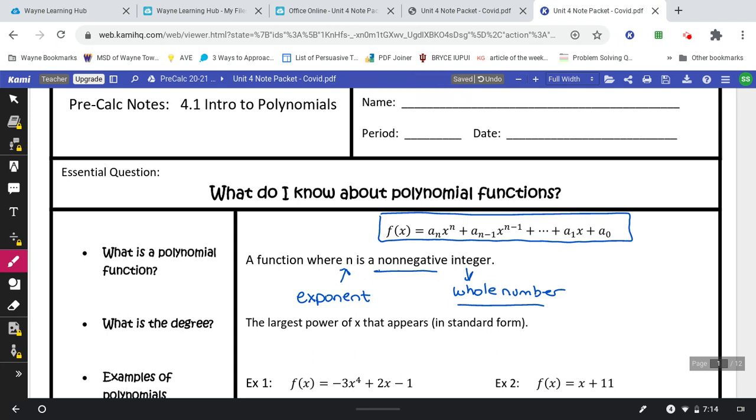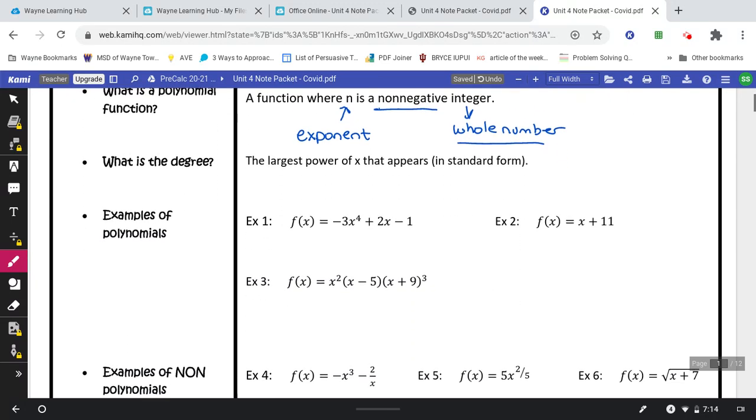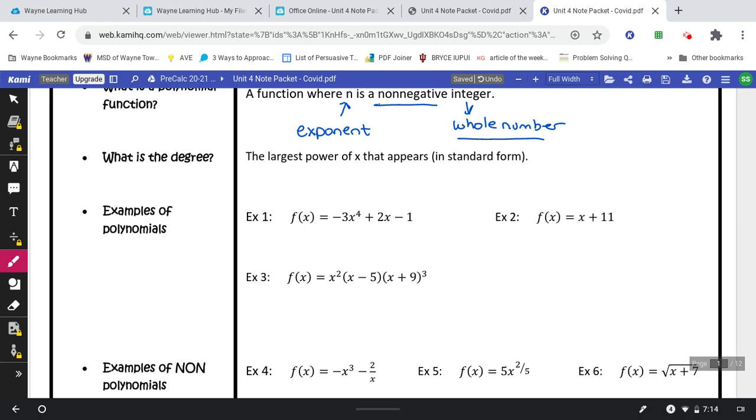The degree of the polynomial is the largest power of x that appears. So if you had x squared, the degree would be 2. Examples 1, 2, and 3 are polynomials. They come in two different forms.